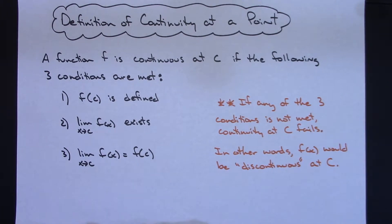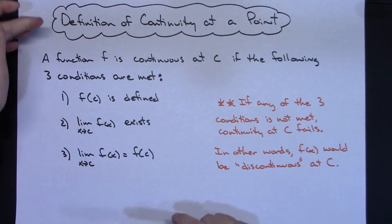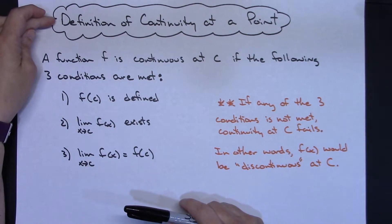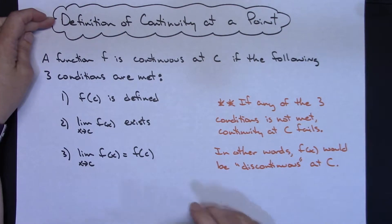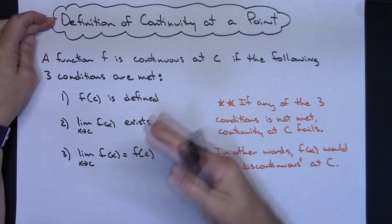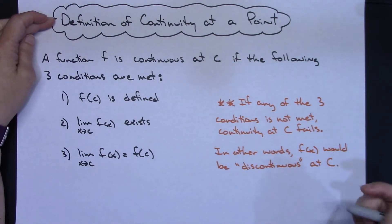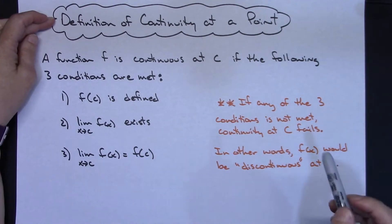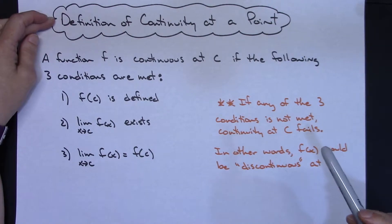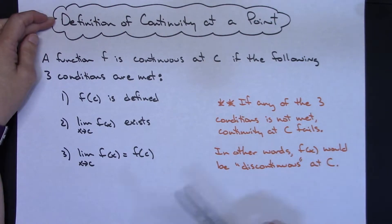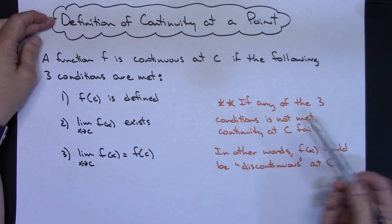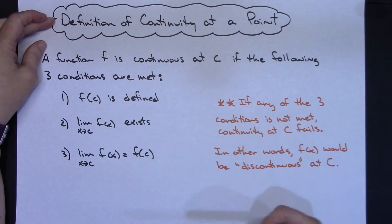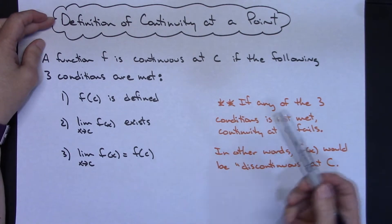In this video I'm going to be taking a look at the definition of continuity at a point. After we go through that, I'm going to give three examples where f is discontinuous at c based on this definition of continuity.